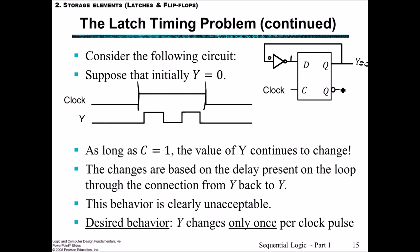The reason why we're getting these multiple changes is due to the delay present in the loop through the connector from Y back to Y. It takes some time for a signal to propagate through the inverter gate and then through this D latch to get back to Y. Whilst that's happening, we get this fluctuation — this change 1, 0, 1, 0 for the output Y — which is clearly unacceptable. What we want is for Y to change only once per clock pulse.